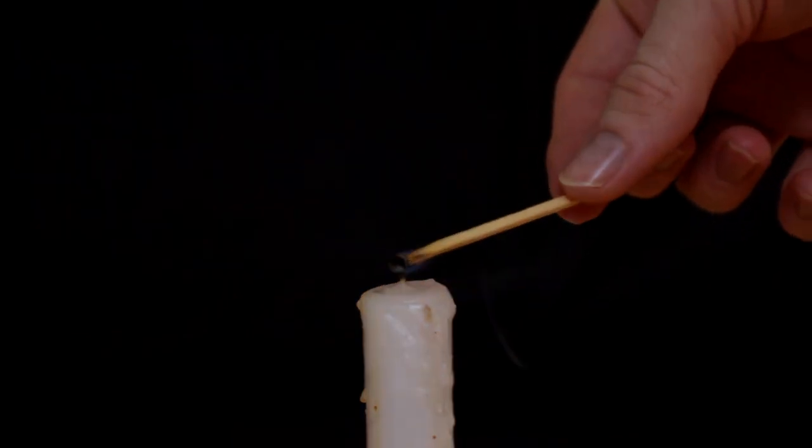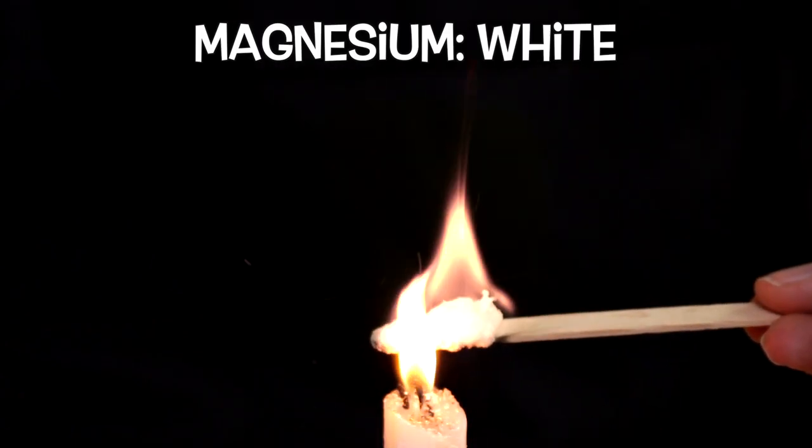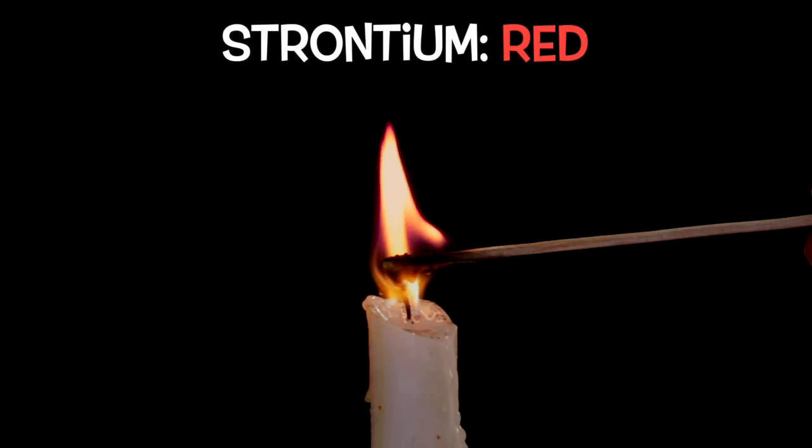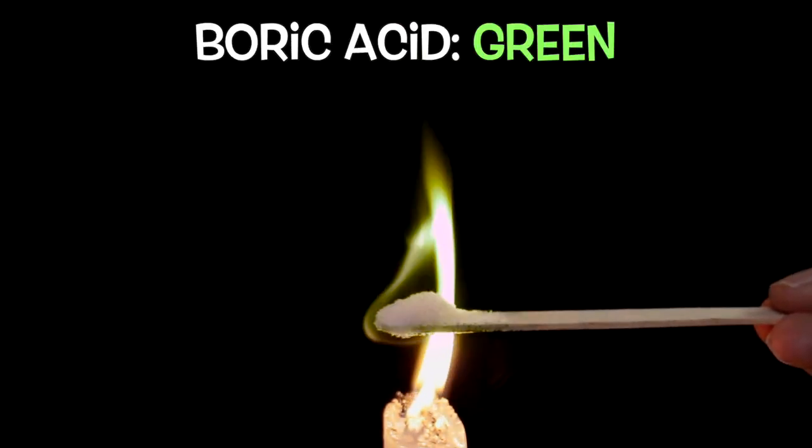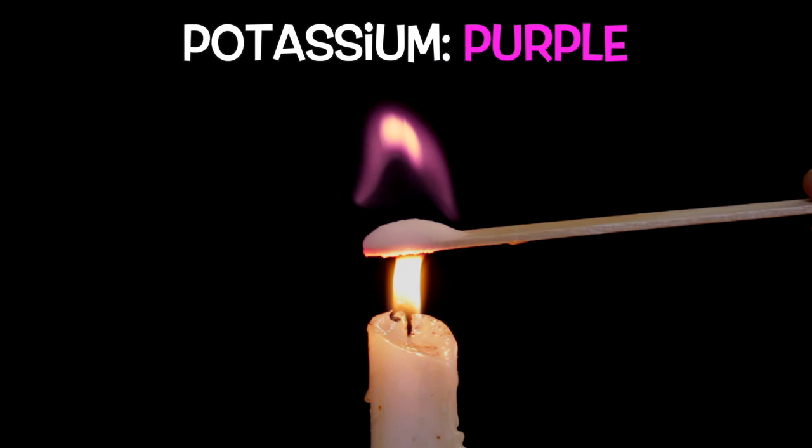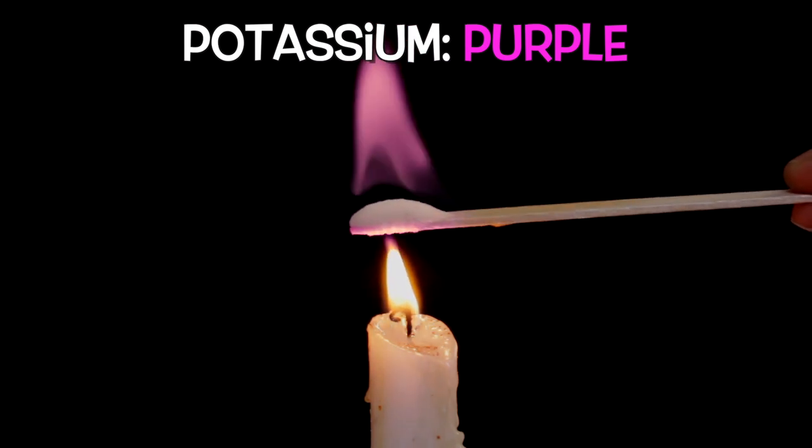You can test all this out for yourself using fire as energy and some good ol' adult supervision. You can dissolve these different elements and molecules and put them in a flame to turn the fire different colors. Magnesium in Epsom salt glows white, strontium in a road flare glows red, boric acid in borax glows green, and light salt, or potassium chloride, the potassium glows purple.